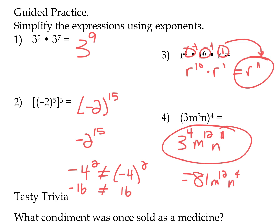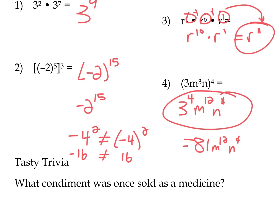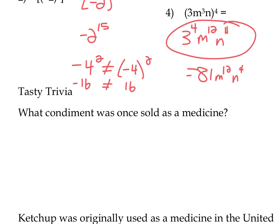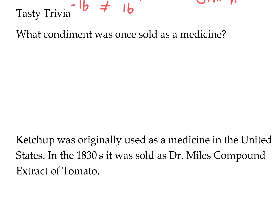A little tasty trivia: what condiment was once sold as a medicine? The answer is ketchup. It was originally used as a medicine in the United States. In the 1830s, it was sold under many different brands, including one by Dr. John Cook Bennett as tomato pills. It was believed to help with indigestion. Because it was fermented, people found medicinal benefits in fermented things, especially in China and other countries. By the 1850s, this business was gone and it became a condiment instead. The presenter admits he doesn't like ketchup and prefers mustard.